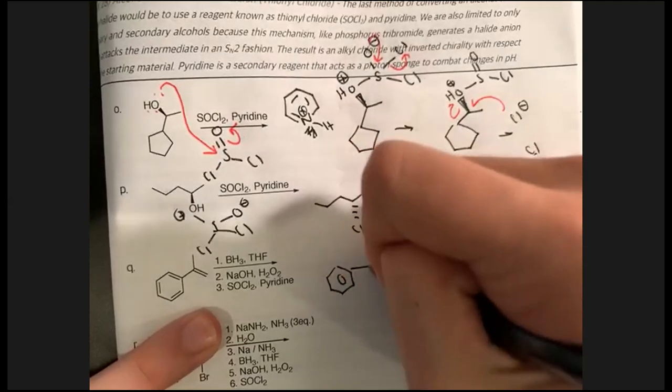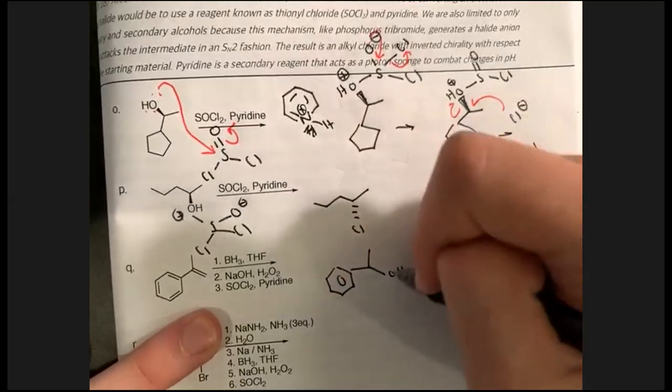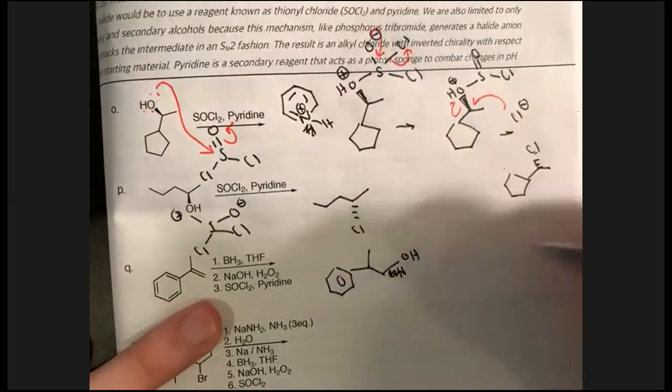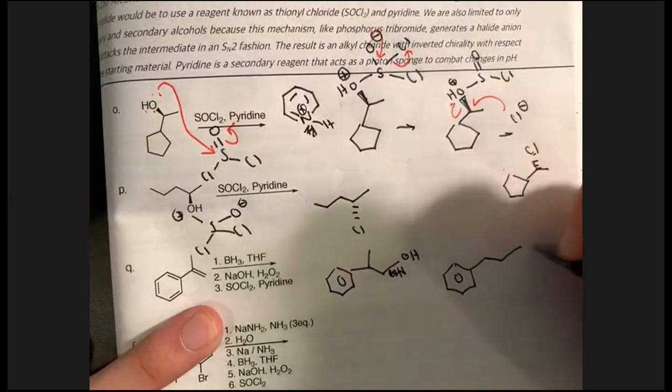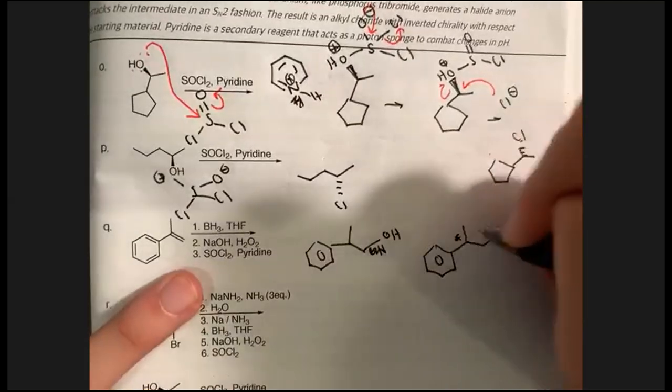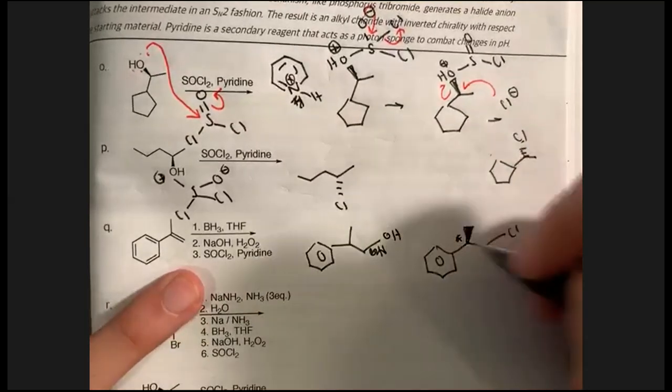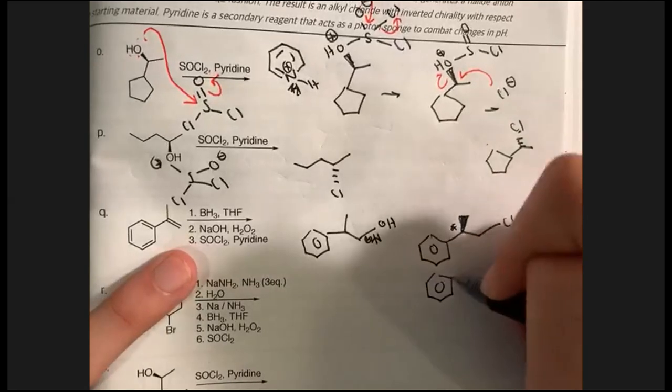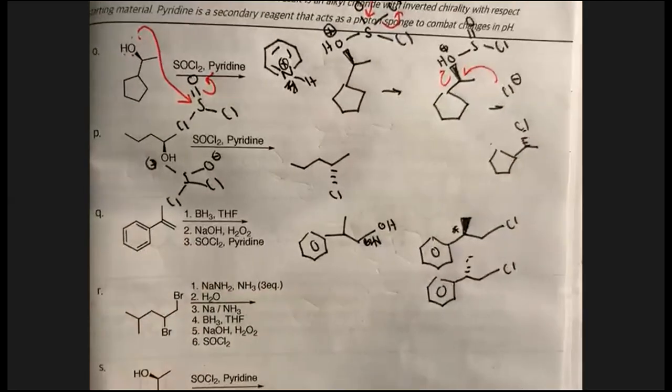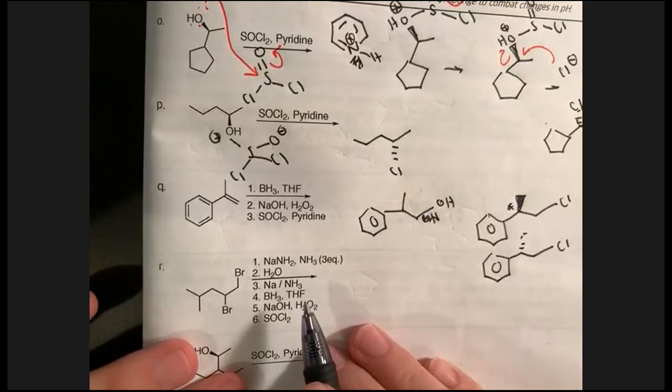For letter Q: hydroboration, steps one and two, forms the anti-Markovnikov alcohol. Step three is an SN2 reaction with SOCl₂. We generated a chiral center in the process, so we have both the wedge and dash products. Even though exam 4 isn't explicitly cumulative, you still need to know all your main reagents and reactions from Chapters 8, 9, and 10 — especially for Orgo 2.